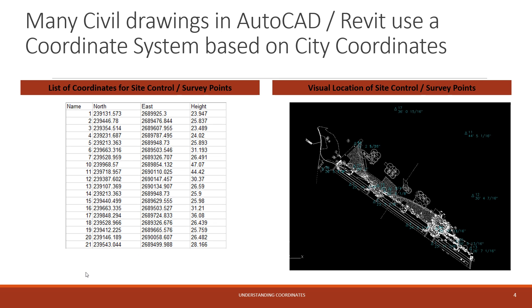If we take these coordinates and think about a job site, a lot of times job sites certainly have a civil drawing associated with them. One of the reasons you have a civil drawing is because it shows how the full property site looks and it shows where certain piping and electrical conduits tie into the city, which are all based on the city coordinate system. Civil drawings are usually at the map plan north view.